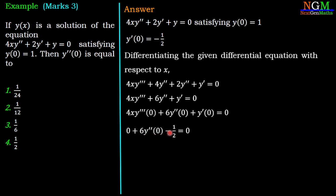Then we have 6y''(0) - 1/2 = 0. Therefore, y''(0) = 1/12, which is option number 2. So option number 2 is the correct answer.